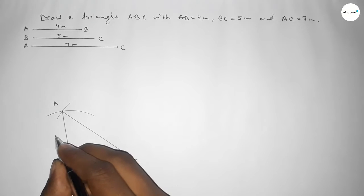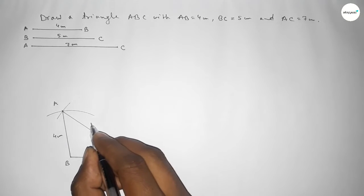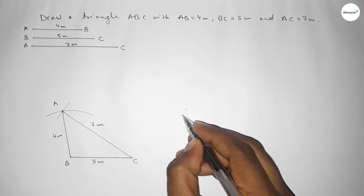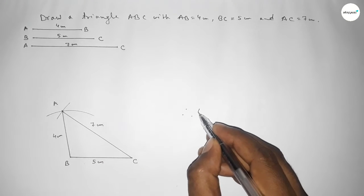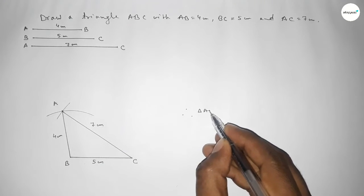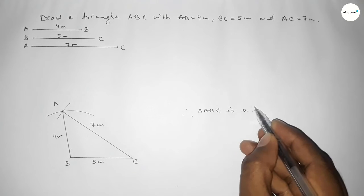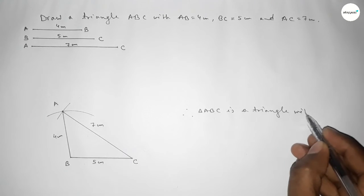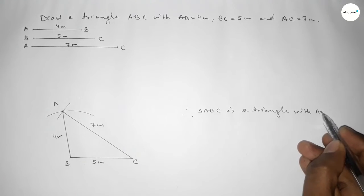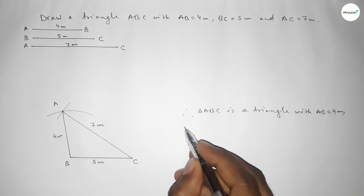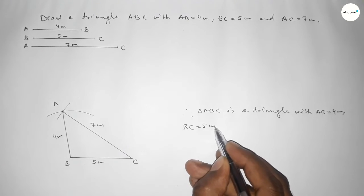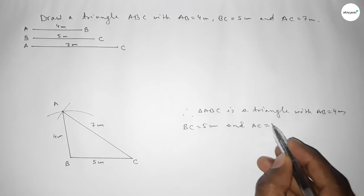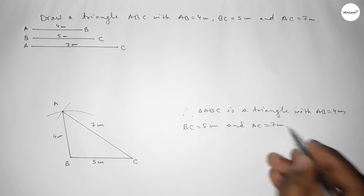This side is 5 centimeter, this side is 4 centimeter, and this side is 7 centimeter. Therefore triangle ABC is constructed with AB equal to 4 centimeter, BC equal to 5 centimeter, and AC equal to 7 centimeter.